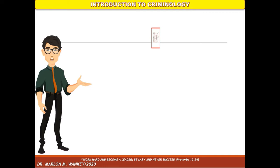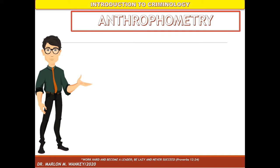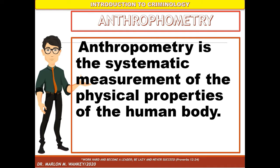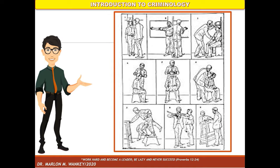One of the scientific methods of identification is anthropometry. It is the first scientific method that was used by police officers or law enforcers in identification. Anthropometry is the systematic measurement of the physical properties of the human body. Measurements like eye height — the distance from the floor to a person's eyes — can be taken sitting or standing. Other measurements include elbow height, hip breadth, overall stature, knuckle height, and popliteal height, or the distance from the floor to the back of the knee.